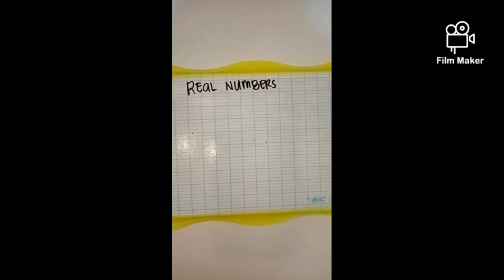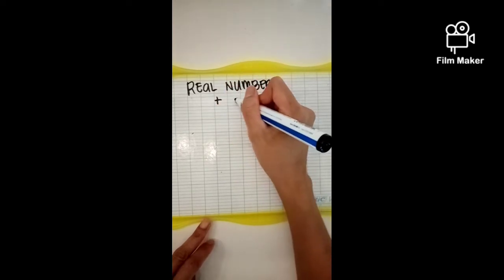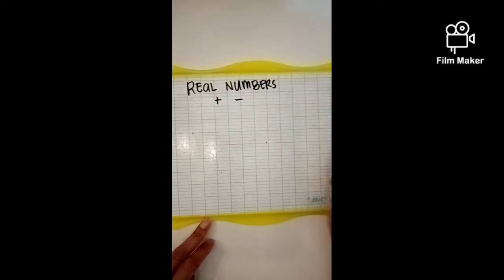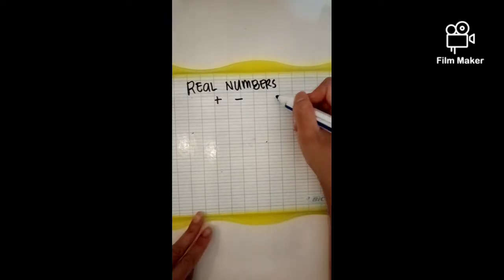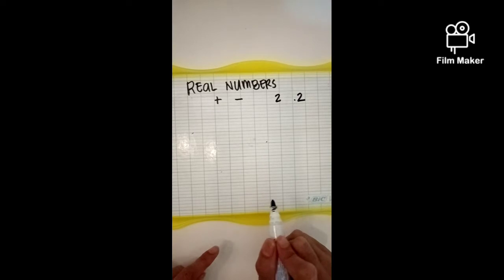Real numbers. What is a real number? Real numbers are a type of numbers that we normally use. They can be positive or negative, large or small, whole or decimal numbers. All are considered as real numbers.